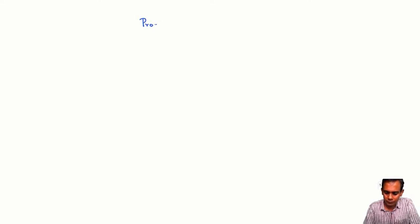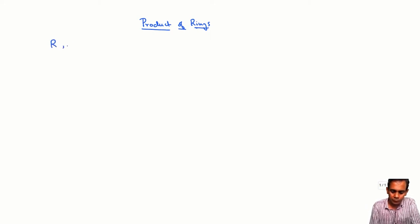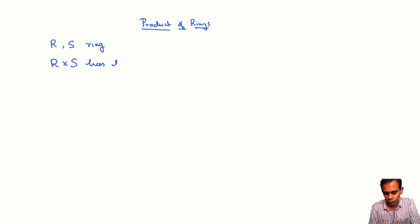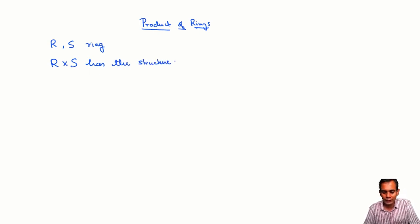In this lecture I'm going to talk about product of rings. Suppose you have two rings R and S, then you can form a new ring by putting a ring structure on the Cartesian product, and this structure is just component-wise addition and multiplication.